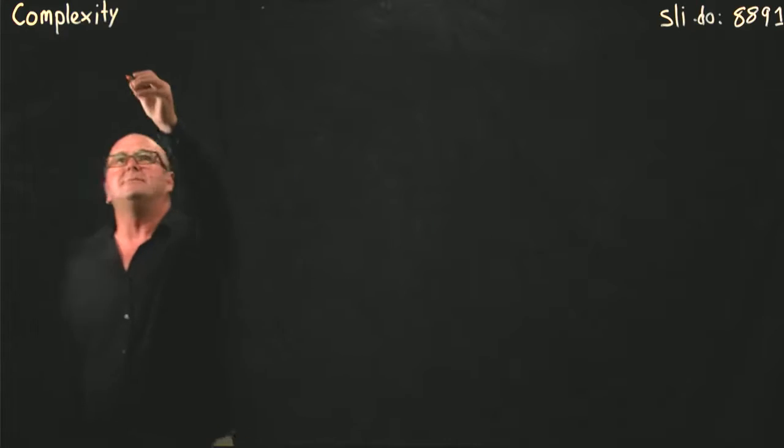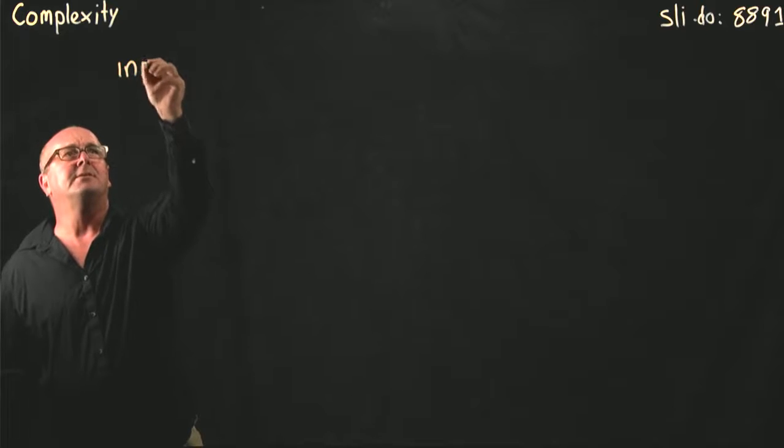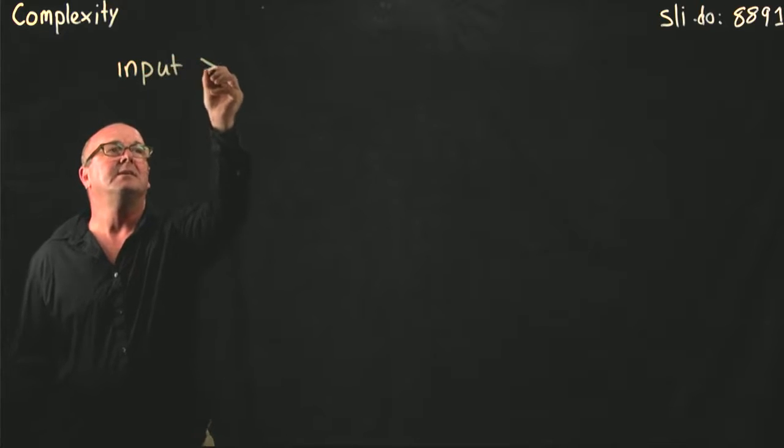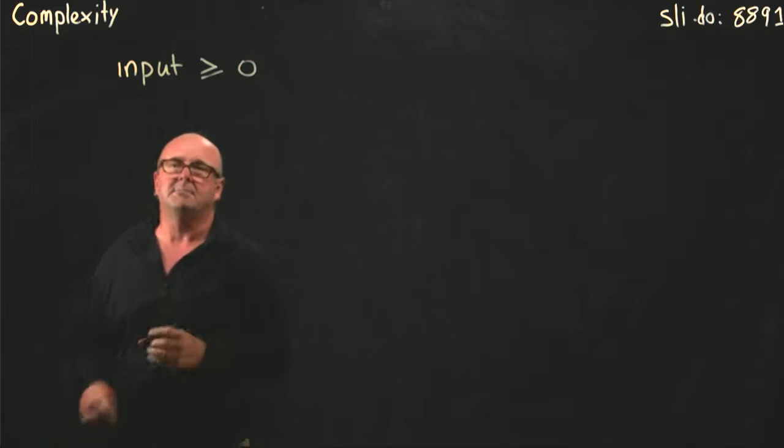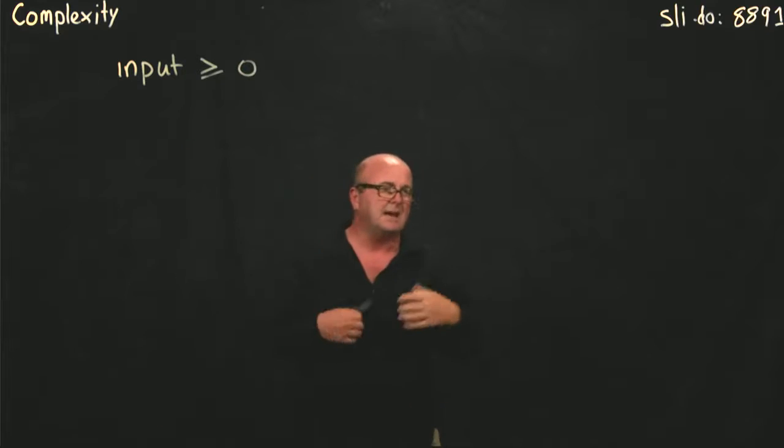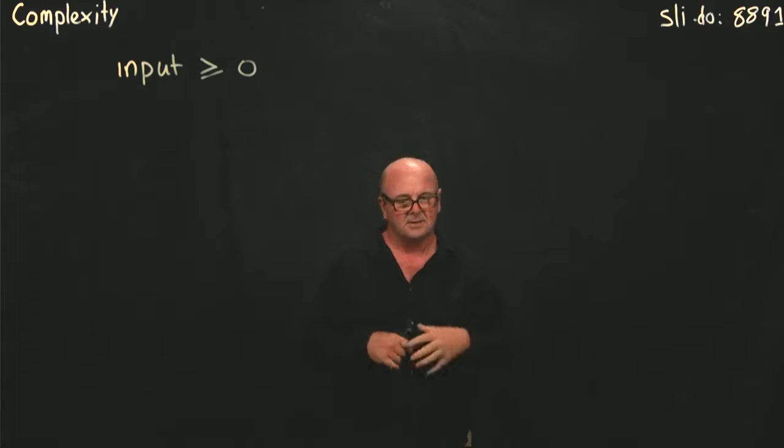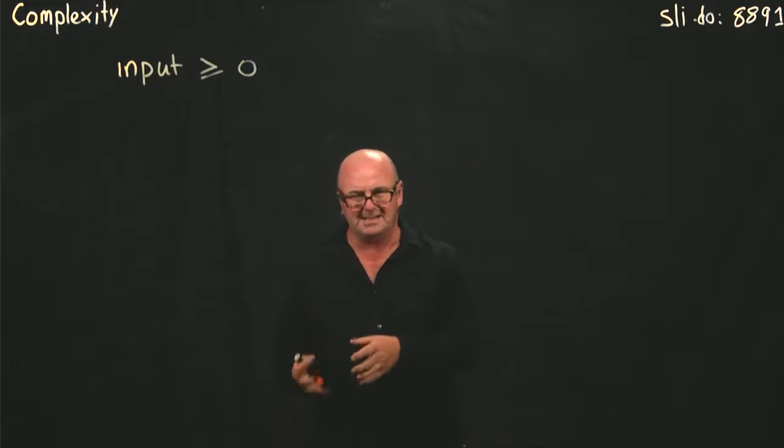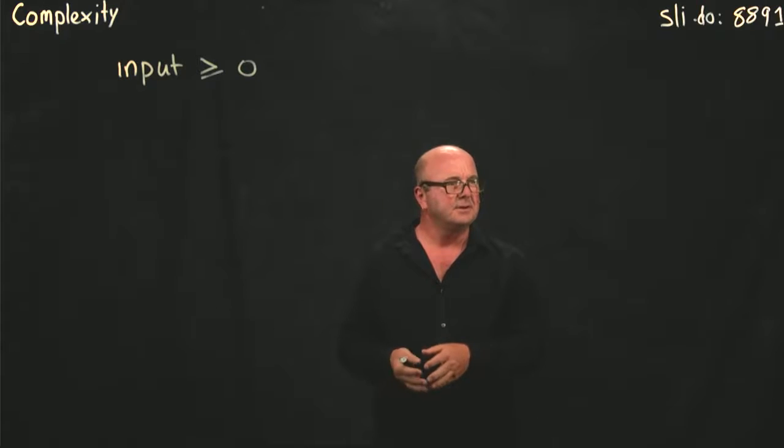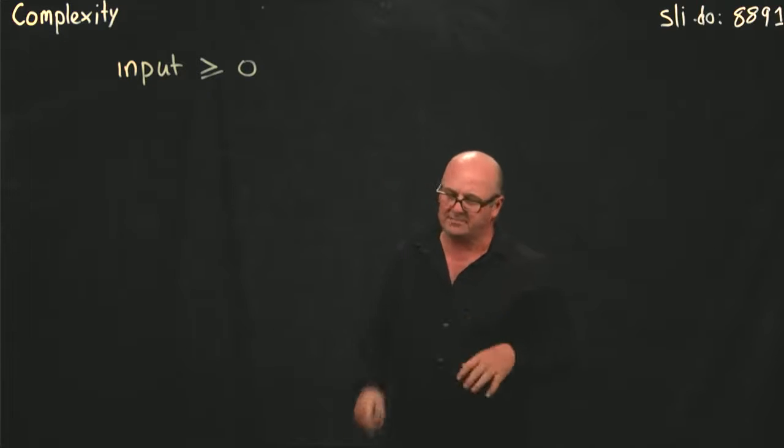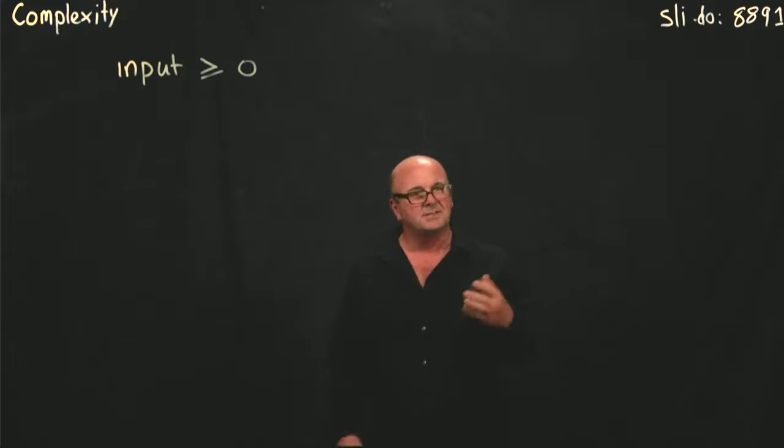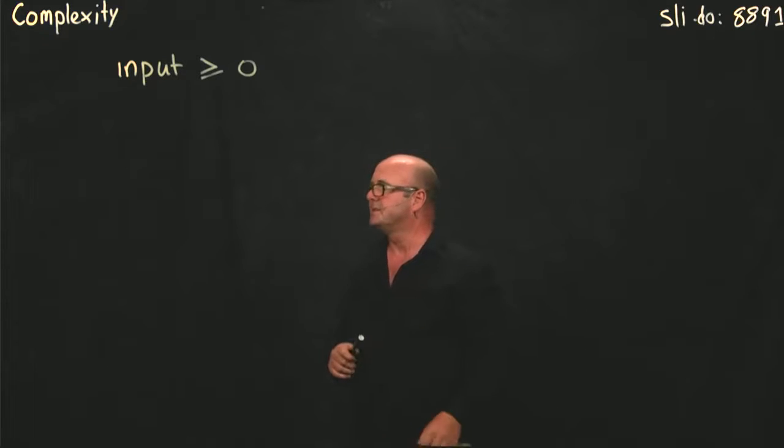The first rule is that the input is always going to be bigger than zero. So n, our input size, always has to be bigger than zero. It doesn't make sense to have a negative input when thinking about complexity. We always assume complexity is larger than zero.